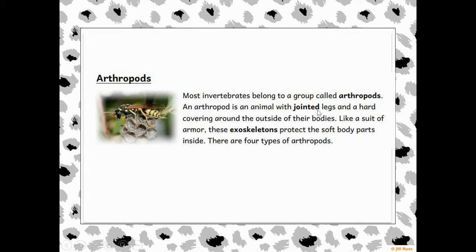Jointed legs means they have sections coming together. If you think about your knee — your knee is a joint that connects the lower part of your leg to the upper part. Like a suit of armor, the exoskeleton — the hard covering on the outside — protects the soft body parts inside. 'Exo' means outside, like exiting, so the exoskeleton is the skeleton on the outside that helps protect the inside of their body.